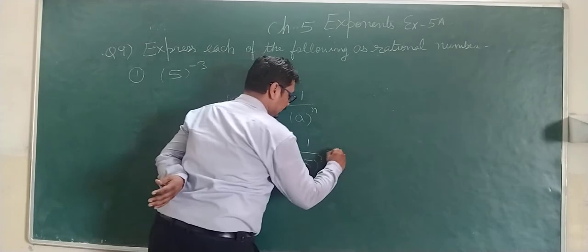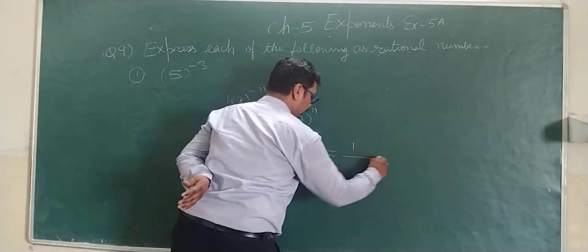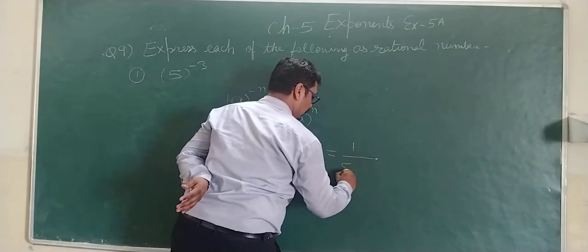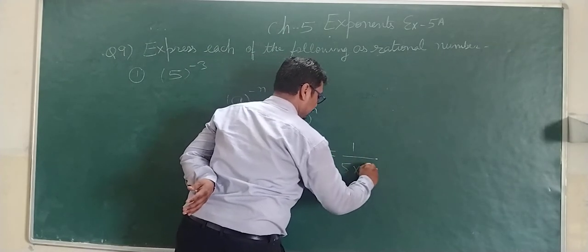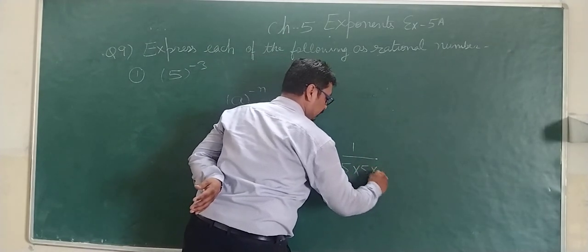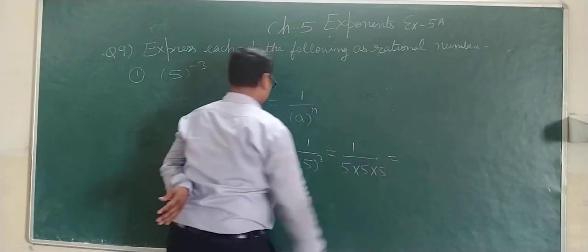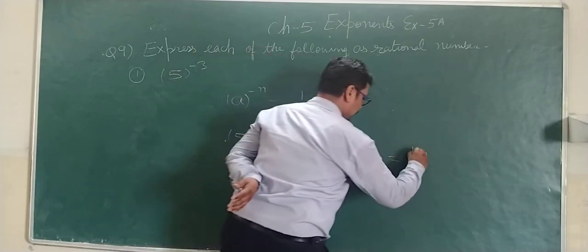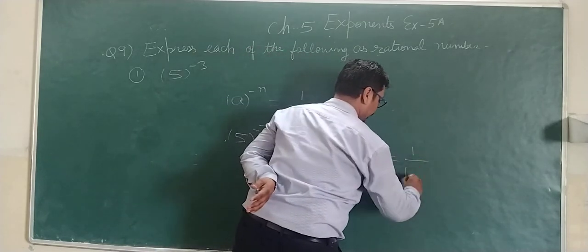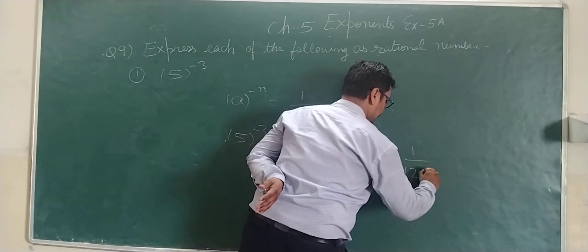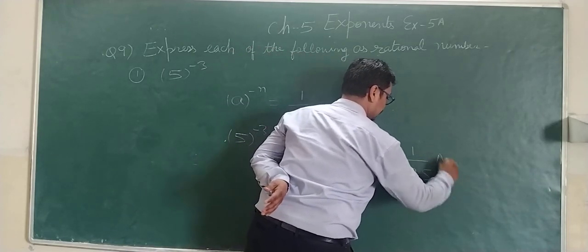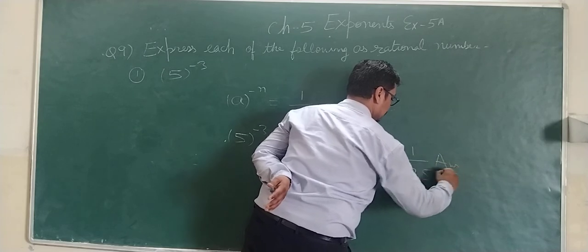It can be written as 1 upon 5 multiplied by 5 multiplied by 5. It is 1 upon 125. This is the answer.